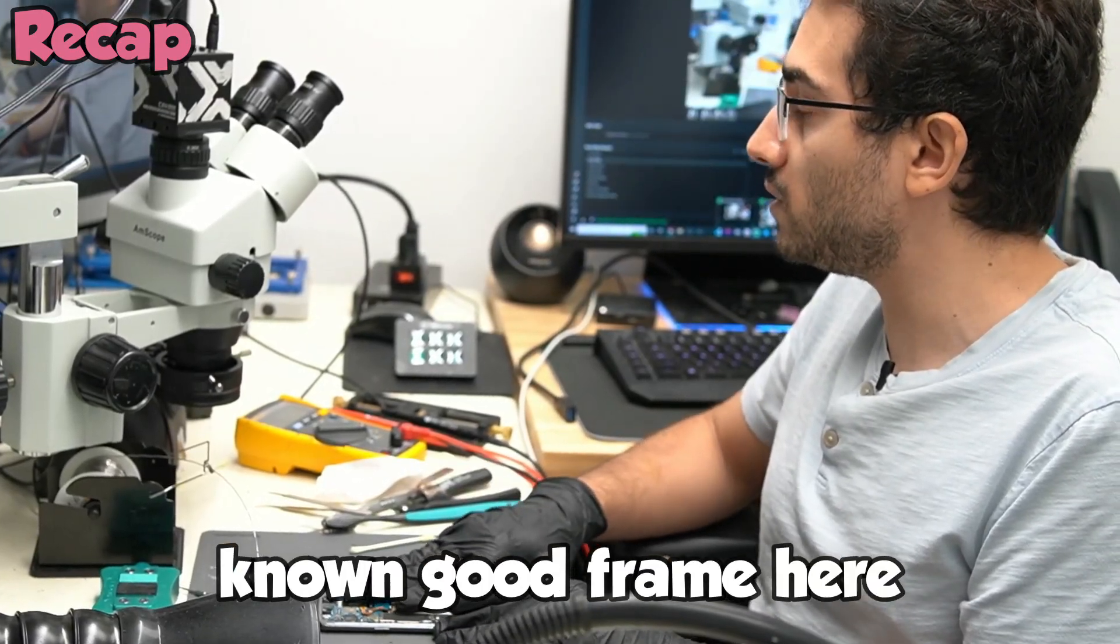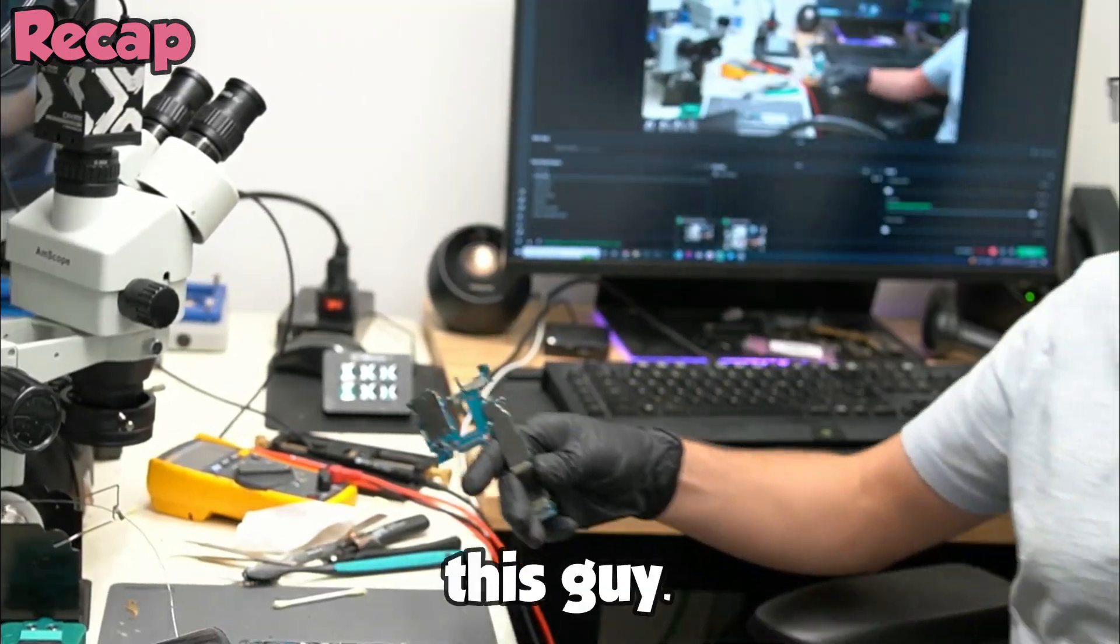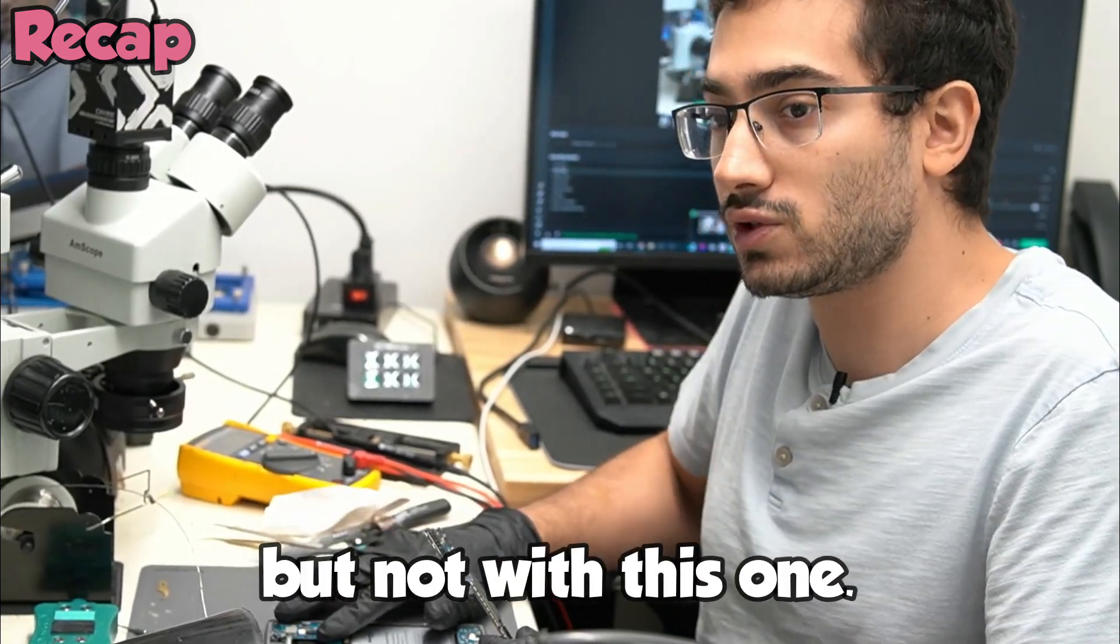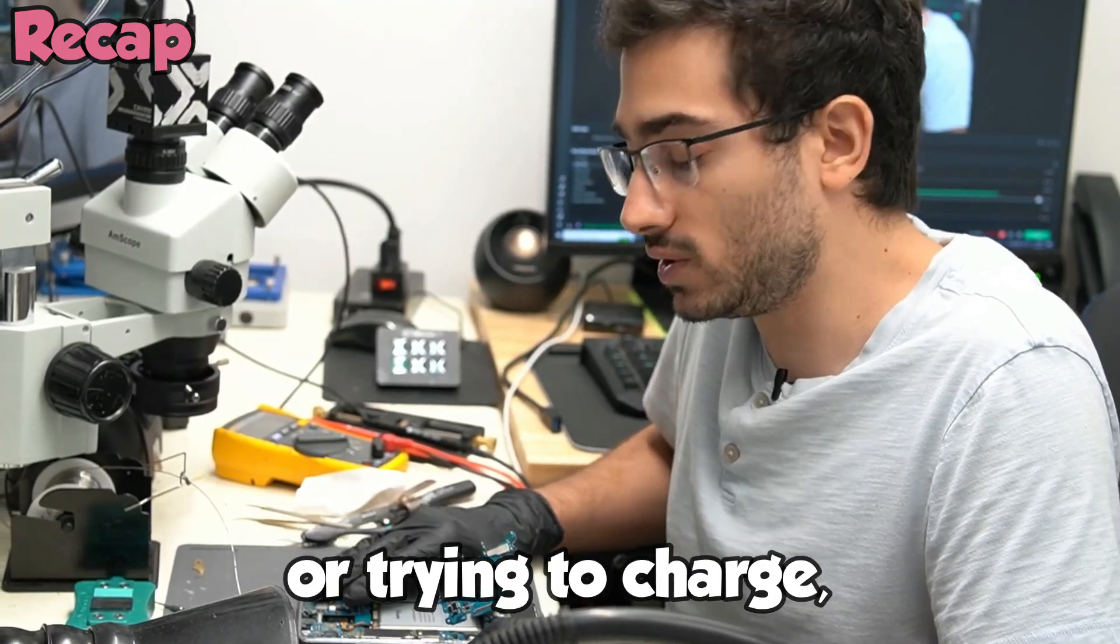We'll run a recap. The phone came in with water damage. The board was dead. We have our known good frame here that we used and our known good board, this guy. So we knew that this frame worked with this board but not with this one. After we cleaned all the visible corrosion, it was charging or trying to charge.